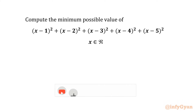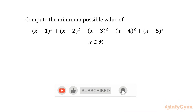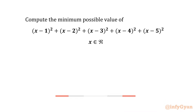Welcome to InfiGyaan, my dear friends. Today in this video we will be solving one very interesting question from algebra: compute the minimum possible value of (x-1)² + (x-2)² + (x-3)² + (x-4)² + (x-5)², given that x is a real number. We will solve this question in two ways.